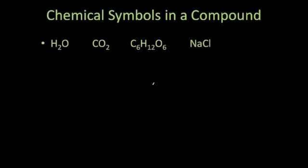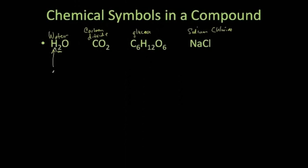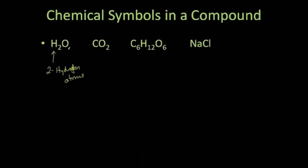The chemical symbols in a compound — what are they telling us? This compound we know as water, this one we call carbon dioxide, this is glucose, and this is sodium chloride, which we call salt. This symbol is telling us two hydrogen atoms. The reason we know it's two hydrogen atoms is because there's a subscript after the element it's representing. A subscript is a small number written slightly below the element symbol. You have two hydrogen atoms and one oxygen atom. If there is no subscript, there's one atom of that element.